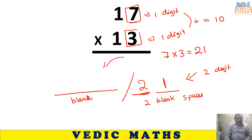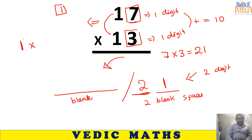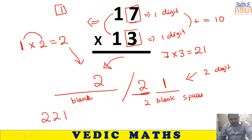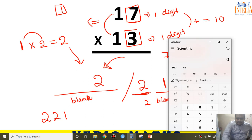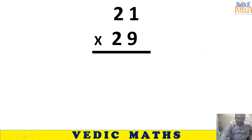For the first blank space at the front, the remaining identical digit is 1. Take that 1 and multiply it with the next natural number: 1 multiplied by 2 equals 2. Write 2 there. So the final answer is 221. You can verify: 17 multiplied with 13 equals 221.